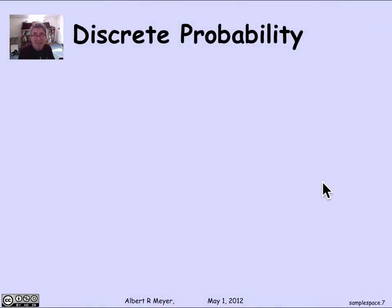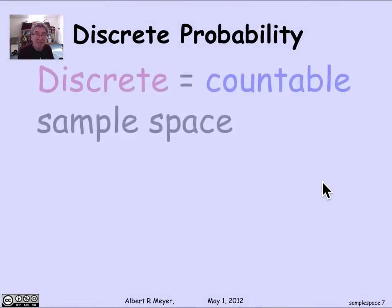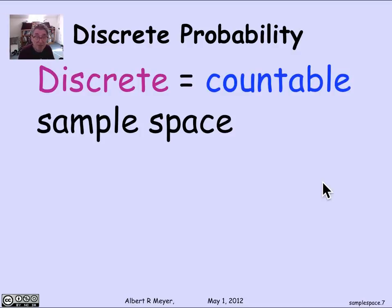Why it's called discrete probability that we're studying is because we have a countable sample space. And as we saw, that discrete combinatorics is the combinatorics of countable and even finite sets, really.